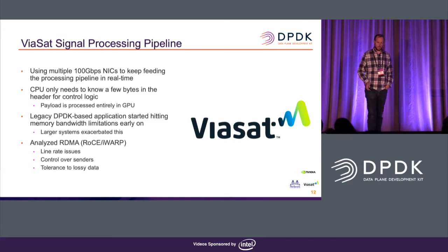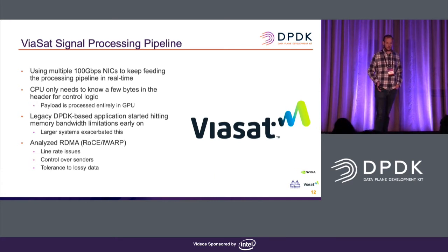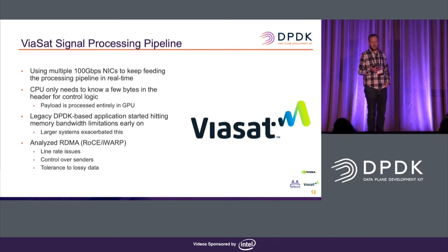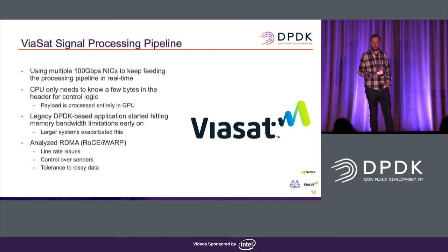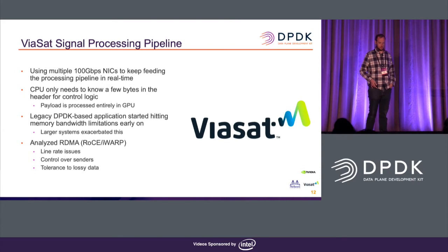We use multiple 100-gig NICs to feed the GPU processing pipeline. Anything less than 100 gig wasn't keeping the GPU busy enough, and GPUs are expensive — you want to keep them fed. The CPU only needs a few bytes from the packet header for control logic; even for 4–8 KB jumbo frames, the CPU only needs the sequence number and source. All signal processing of the payload happens entirely in the GPU. We hit memory bandwidth limitations early, and as systems grew larger, this problem was greatly exacerbated.